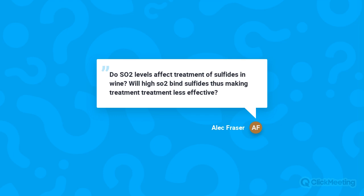Alec Fraser asks whether SO2 levels affect the effectiveness of sulfide treatment — specifically, will high SO2 bind sulfides and make treatment less effective? When using ascorbic acid, SO2 is important for capturing any hydrogen peroxide produced by the ascorbic acid reaction. I don't believe SO2 binds sulfides in a way that would significantly reduce treatment effectiveness. Having a little sulfite present when treating with copper and ascorbic acid is actually beneficial and is fine to do.